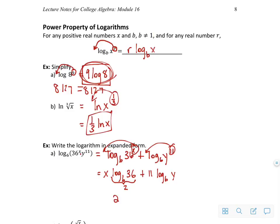So this becomes 2x. It's 2 because 6 to what power gives me 36? I get 2x plus 11 log base 6 of y. And there's my final answer.